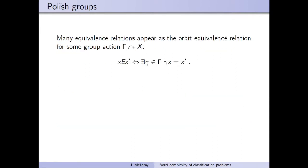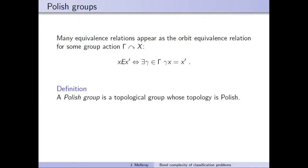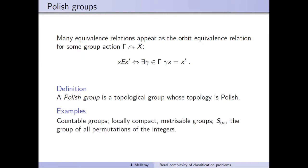Now we care about equivalence relations. Many come up as orbit equivalence relations — any equivalence relation appears as one induced by a group action. Groups that will play a role in the talk are Polish groups: topological groups where the group operations are continuous and the topology is Polish. The key examples are countable discrete groups, and the permutation group S∞ of all bijections of the integers, which has a natural Polish group structure.